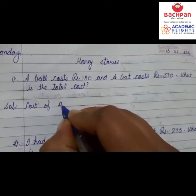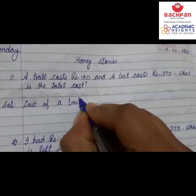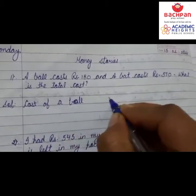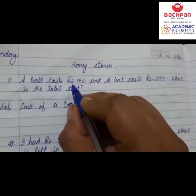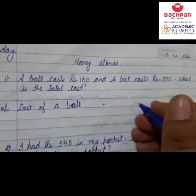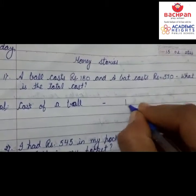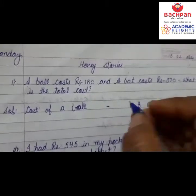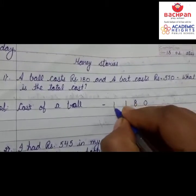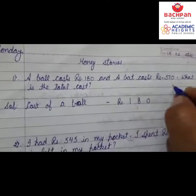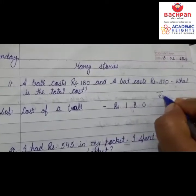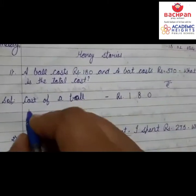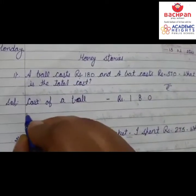Now let's make the statement. First line: Cost of a ball — the ball's cost is rupees 180. So when we write 180, we put 'rupees' in front of it. You can write 'rupees,' or you can write 'Rs.' Next line: Cost of a bat.